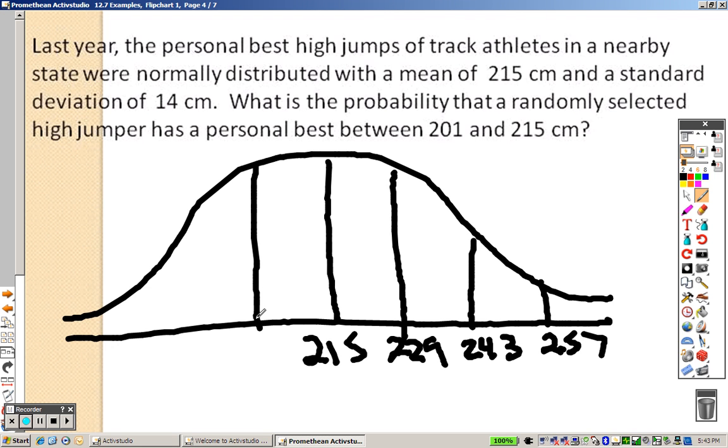We've got to go the other way, so, take 215 minus 14, and we get 201. And, minus 14, again, from that, we get 187, and minus 14, from that, we get 173.